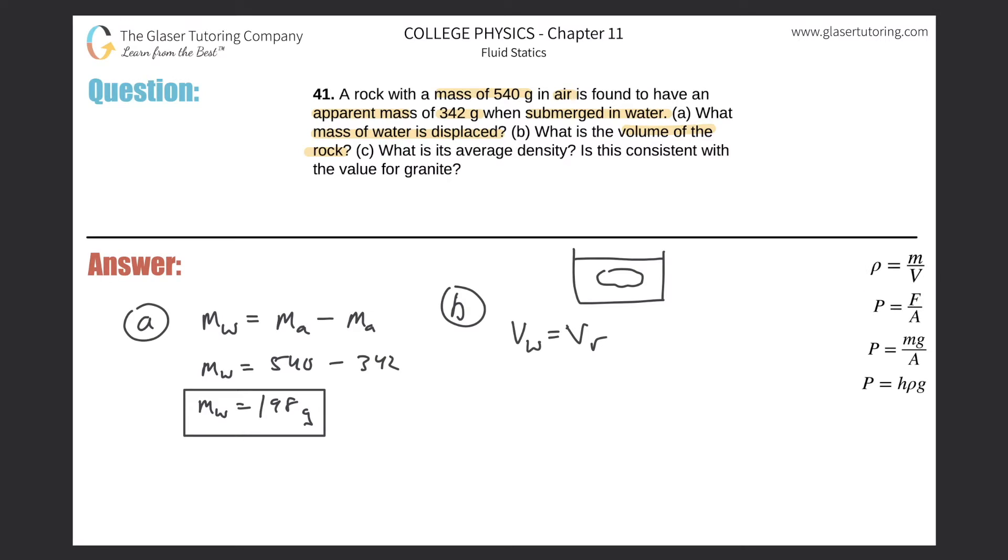Now I'm going to use this formula that says the density of water equals the mass of the water divided by the volume of the water. Why am I doing this for water when they're asking for the volume of the rock? Well, the reason is because I know the density of water, that's a known constant that you might have to memorize, and we do know the mass of the water that was displaced. So I'm using the density formula for water, but the reason why this is important is because we realize that the volume of water equals the volume of the rock. So I can simply substitute the volume of the rock into the formula.